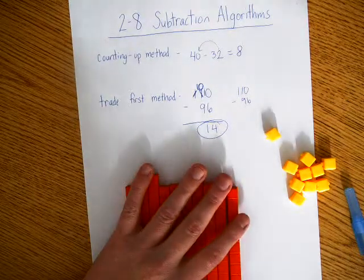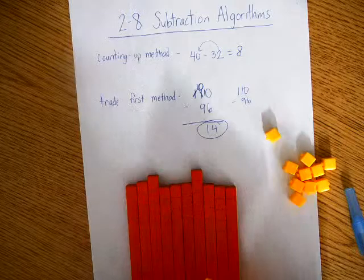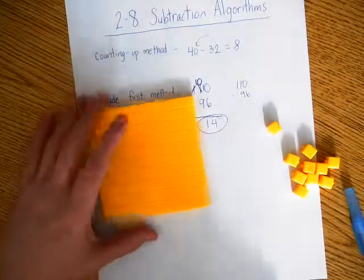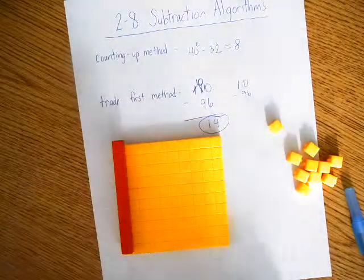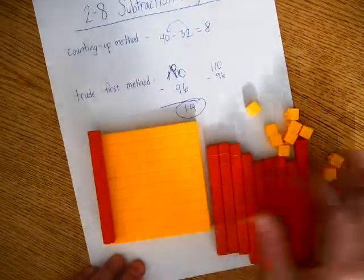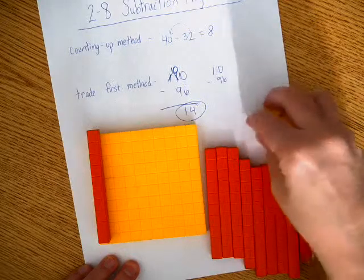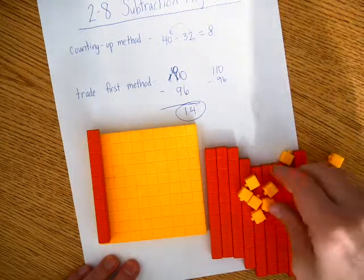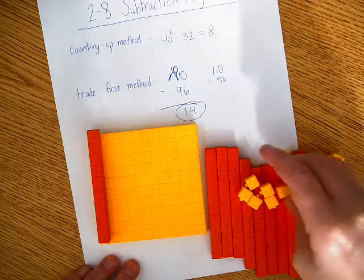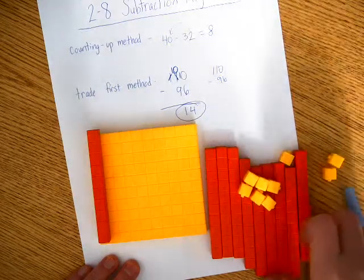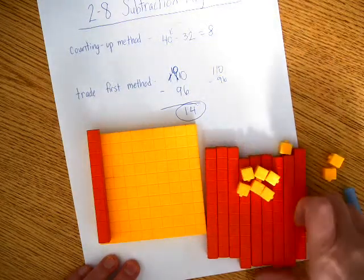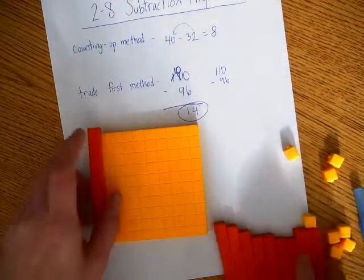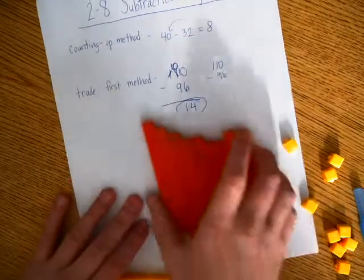And the base 10 blocks are a great way to model this because I can say, well, I have 110, and then I have 96. You can model both of those numbers. So if you want to take 96 away from 110, how can you do that? And this is a great way to do it because, look, you can just swap out or trade first.